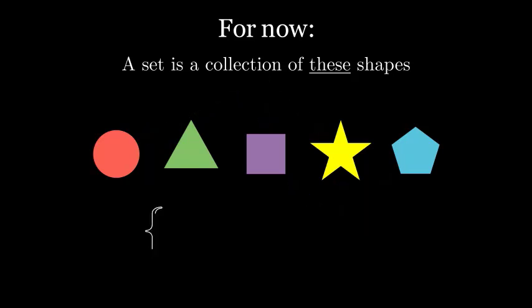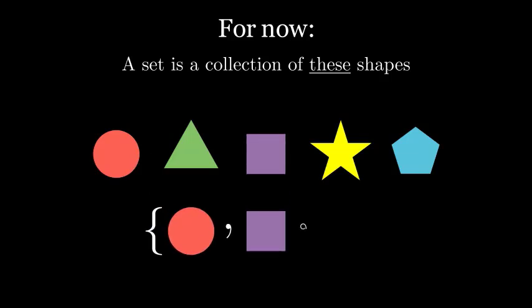In math, we often write sets like this, where we list everything in the set, separated by commas, and surround the whole thing in a pair of curly braces. Each of these ways of denoting a set has its advantages and disadvantages.